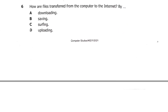Question 6: how are files transferred from the computer to the internet? Is it A: downloading, B: saving, C: surfing, or D: uploading? Note that downloading is from the internet to the computer. The answer here is uploading, so D is the answer.